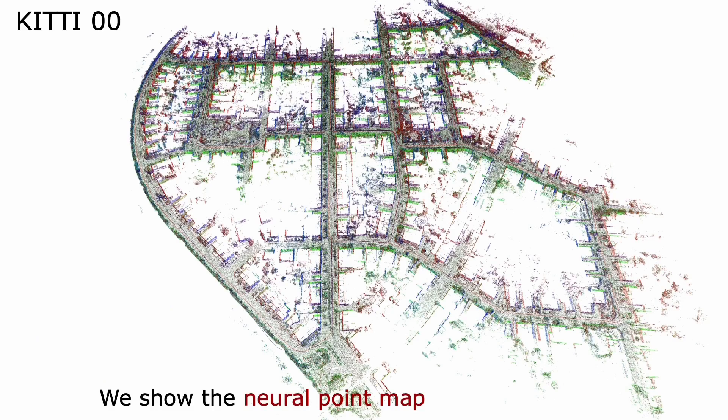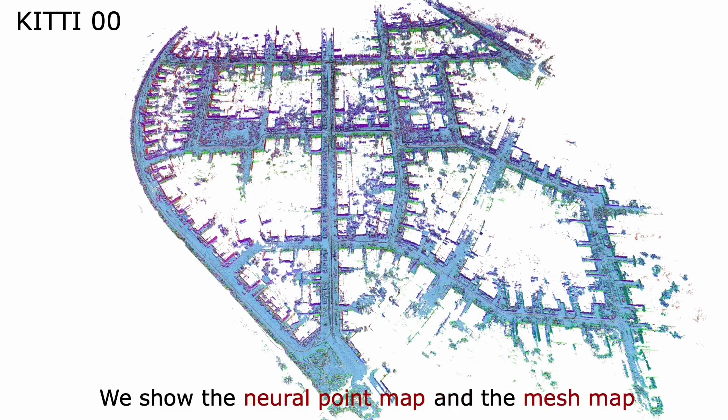Here you see the neural point map — the internal representation of the system — as well as an overlay with the mesh map that can be used for further downstream tasks.